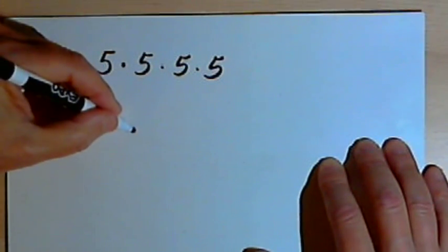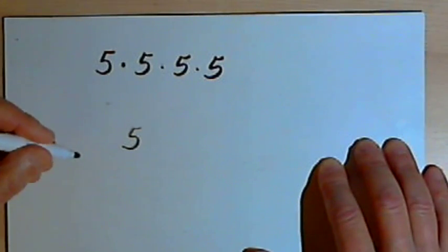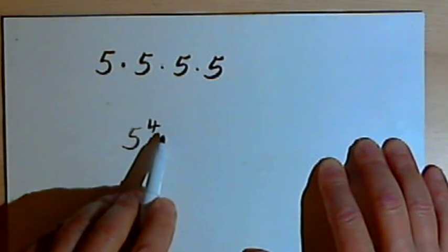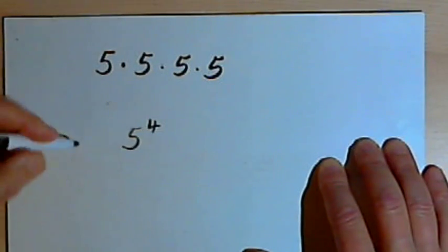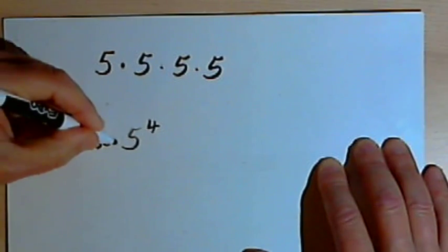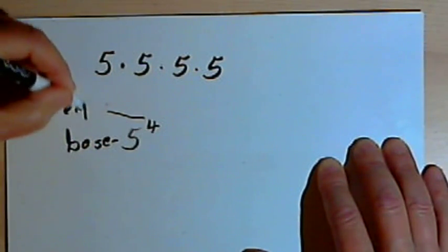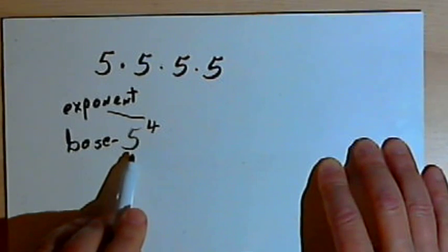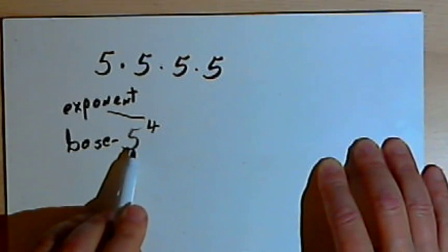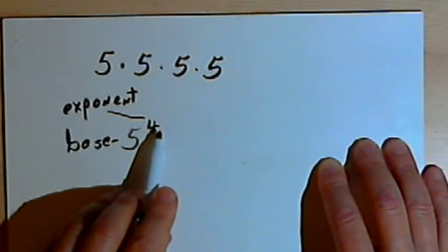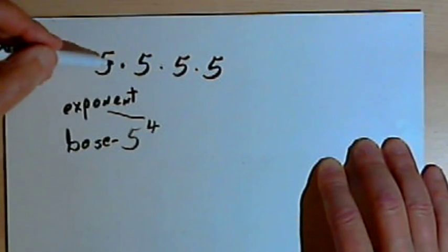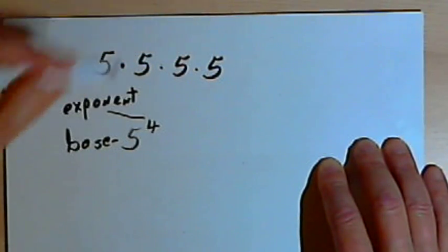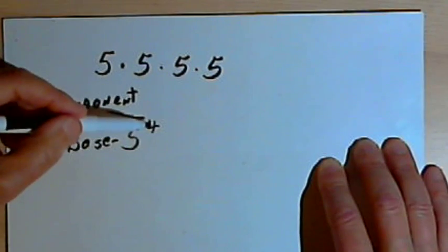Using exponents, I'm going to write the number 5, and then after it, a little bit higher, I'm going to write a small number 4. That 4 is an exponent. The 5 is called the base, and the 4 is the exponent. What this notation means is that we take the base — the 5 — and multiply it repeatedly, in this case 4 times. The exponent tells us how many times we're multiplying it. So both notations mean the same thing: 5 times 5 times 5 times 5, or just 5 with the exponent 4 after it.